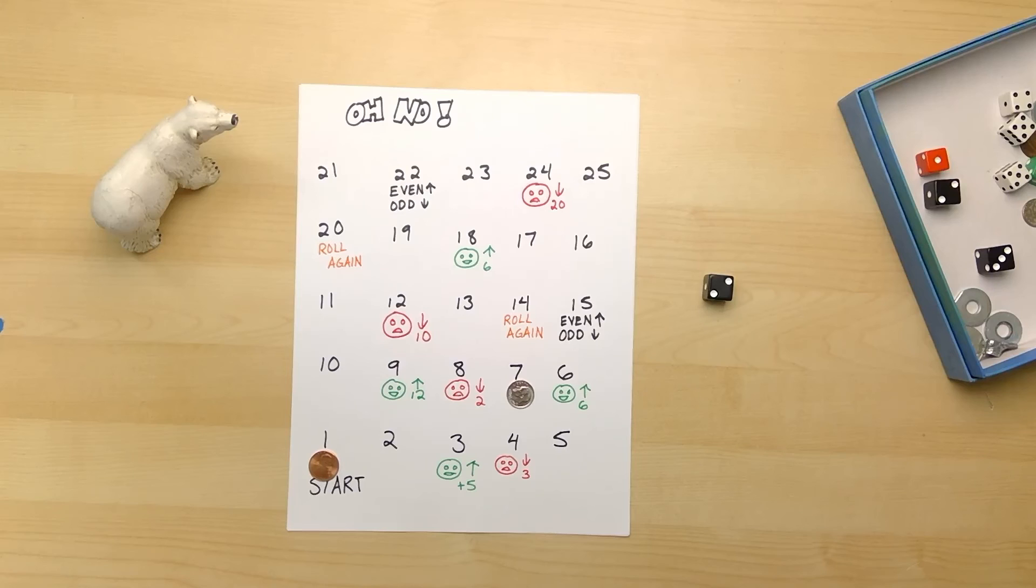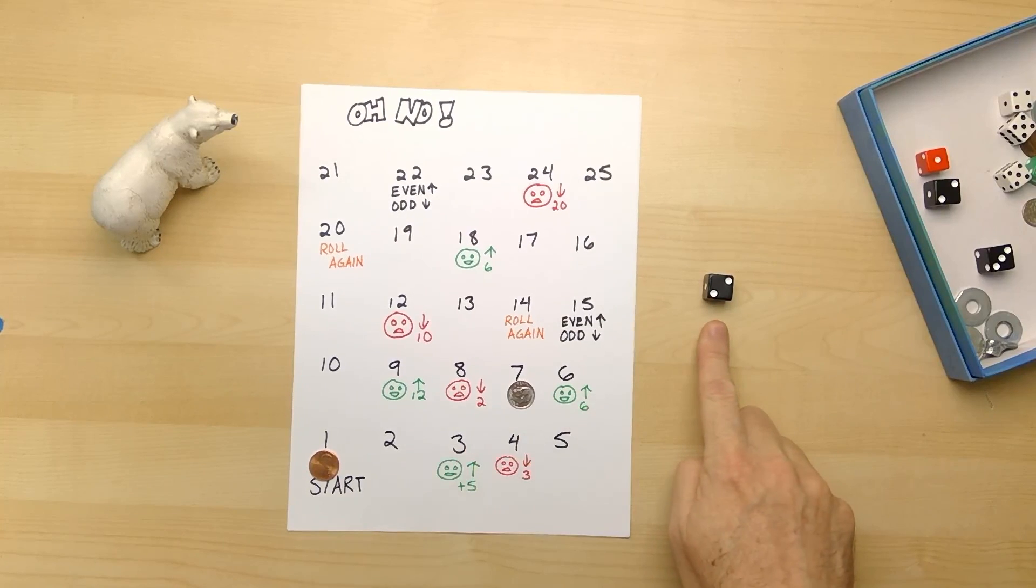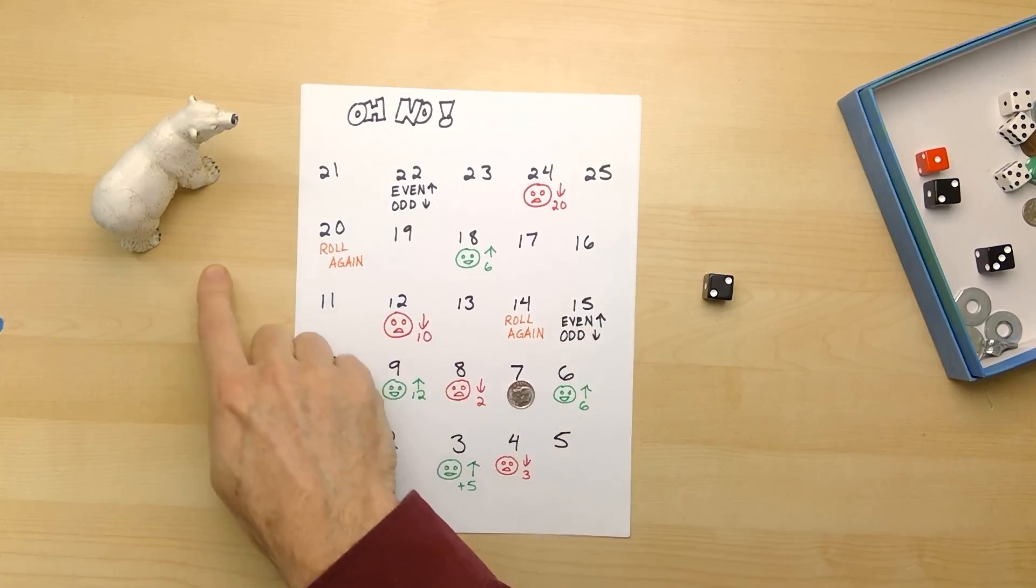So that's how the game works. You keep taking turns, following the rules on the spaces that you land on, and you make your way all the way up to the number 25 or beyond. This looks like a fun game. Remember, you just need some paper, something to draw and write with, playing pieces, a dice, and maybe a bear.